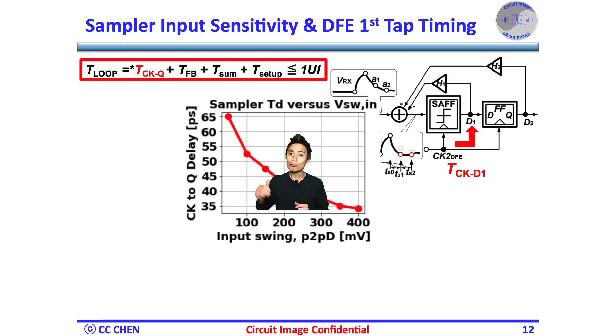For example, our final residual eye height is 100 mV peak-to-peak differential around. Then, the sampler's response is roughly 50 picosecond. If another delay is starting less than 50 picosecond, then the maximum period of the DFE would be 100 picosecond, which would be 10 gigabit per second.